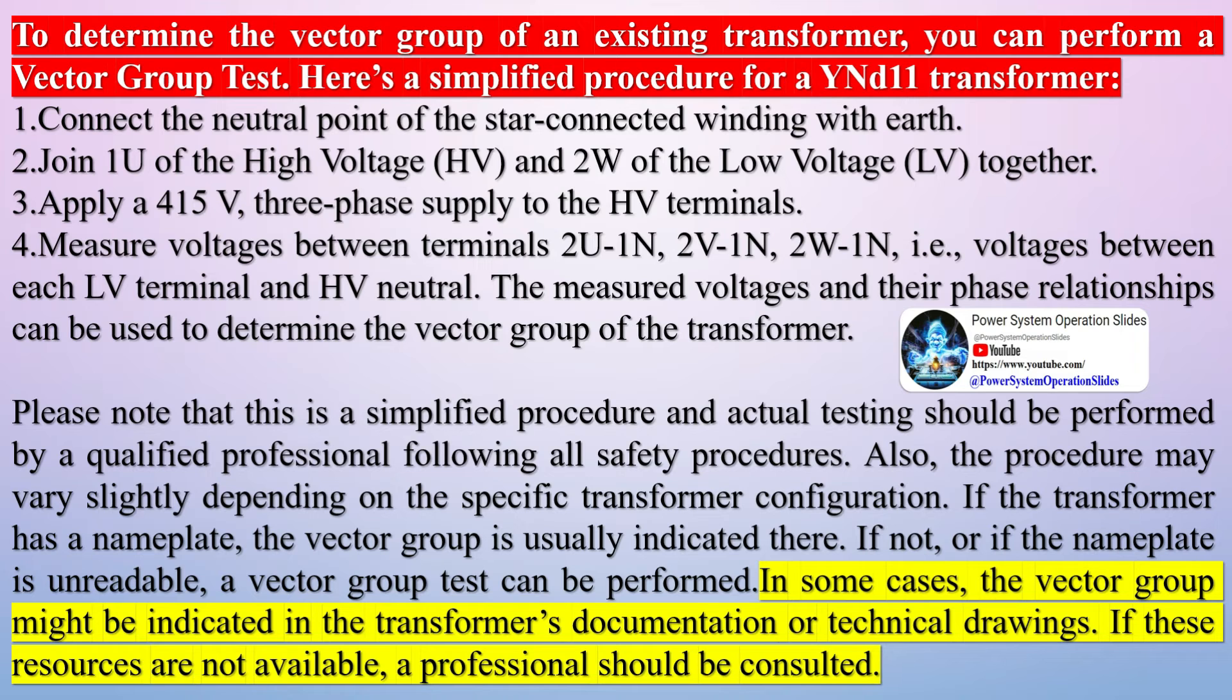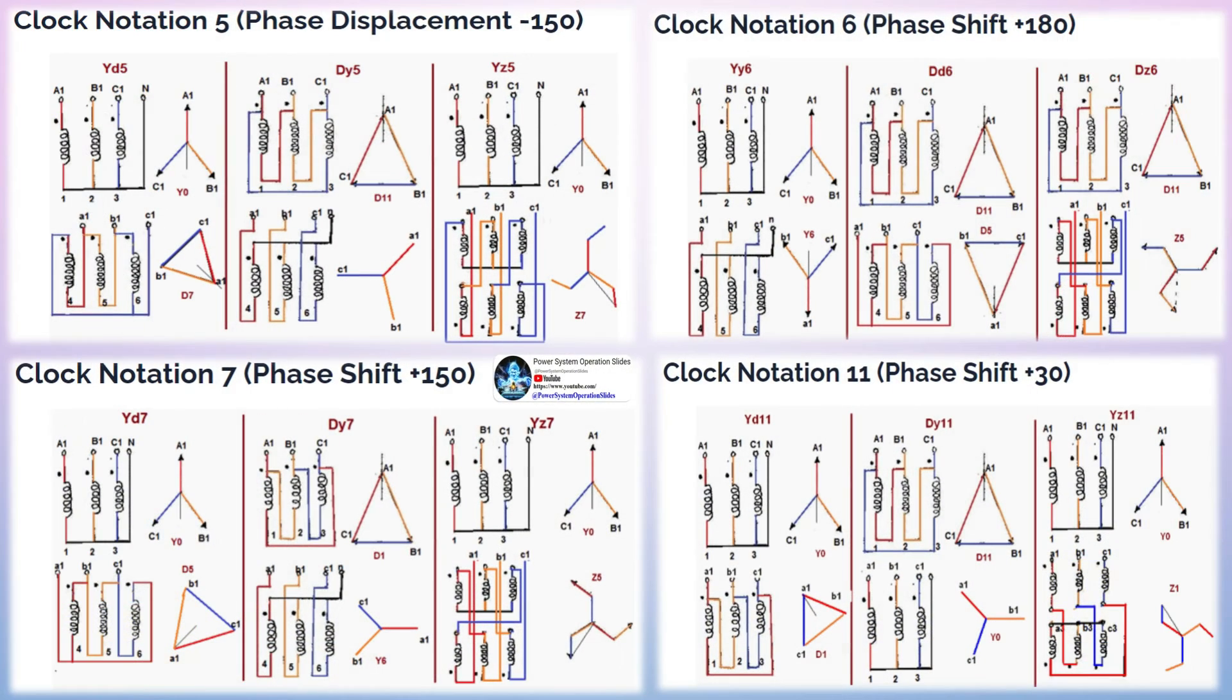If the transformer has a nameplate, the vector group is usually indicated there. If not, or if the nameplate is unreadable, a vector group test can be performed. In some cases, the vector group might be indicated in the transformer's documentation or technical drawings. If these resources are not available, a professional should be consulted.